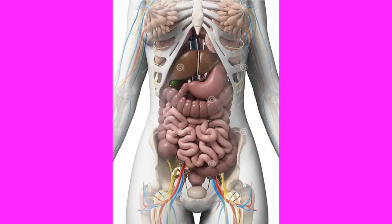Some organisms are unicellular and others are multicellular. Some multicellular organisms are able to assemble their cells to create permanent tissues. Did you know there are four main types of tissues in the body of human beings? They are nervous, epithelial, muscular, and connective tissues.